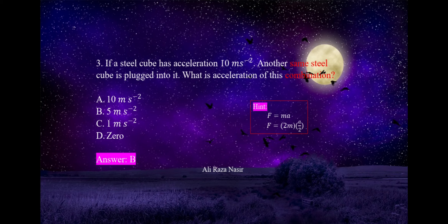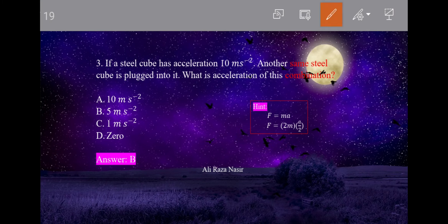Next MCQ: if a steel cube has acceleration 10 m/s², and another identical steel cube is attached to it, what is the acceleration of the combination? The mass doubles. Since force remains the same, when mass increases by a factor, acceleration decreases by the same factor. So acceleration becomes half — that is 5 m/s². Our answer is option B, 5.